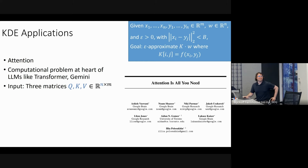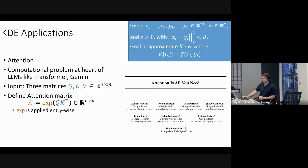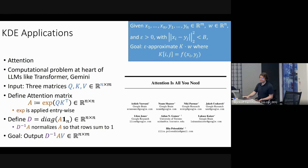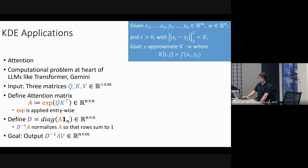In the attention problem, you're given as input three matrices — usually called the query, key, and value matrices. They implicitly define the attention matrix: you compute Q times K-transpose, then entry-wise exponentiate this matrix. You also define D as the diagonal matrix of row sums of the attention matrix, so D-inverse times A renormalizes A so rows sum to one. The goal is to output D-inverse times A times V.